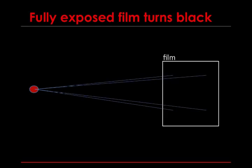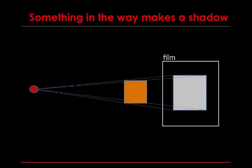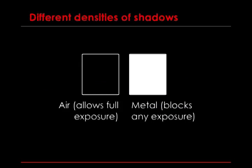Something in the way of that X-ray beam makes a shadow. For some things, like metal, they block the X-rays completely, so it'll be a white shadow. But virtually everything in the human body will let some degree of X-ray pass through, and the shadow will be some range of gray.